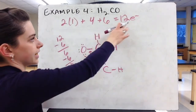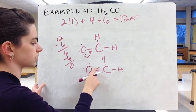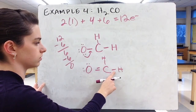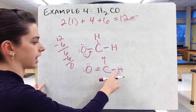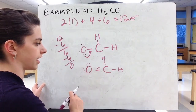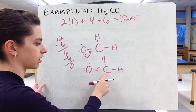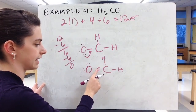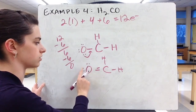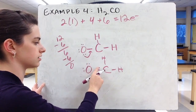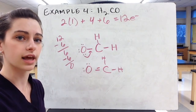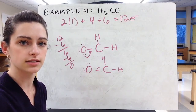Checking the final count: 12 total electrons — 2 in each of the 3 single bonds (6), 2 more in the additional bond making the double bond (2), and 2 lone pairs on oxygen (4) — totaling 12. Hydrogens have their 2, carbon has 8 in its 4 bonds, and oxygen has 8 between its double bond and 2 lone pairs. Everyone has the 8 valence electrons they need, completing the Lewis structure for H₂CO.